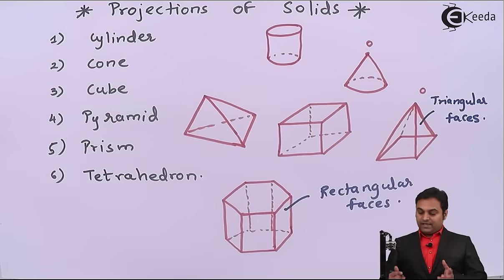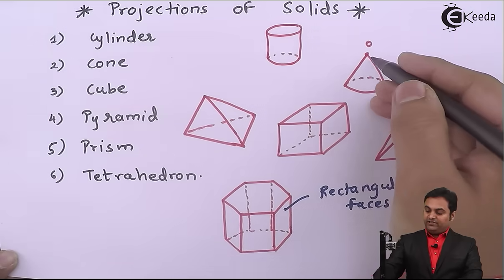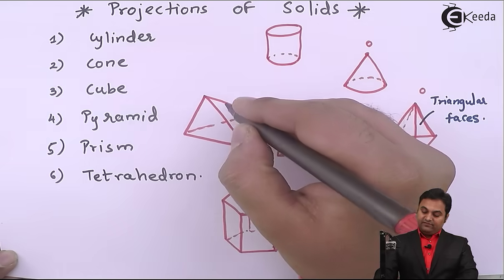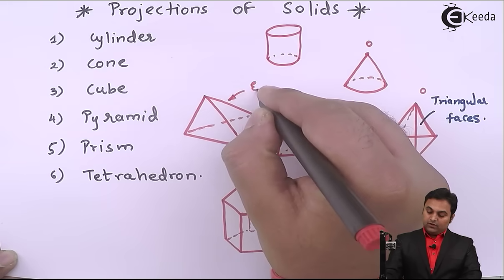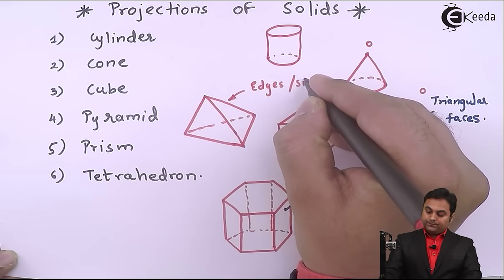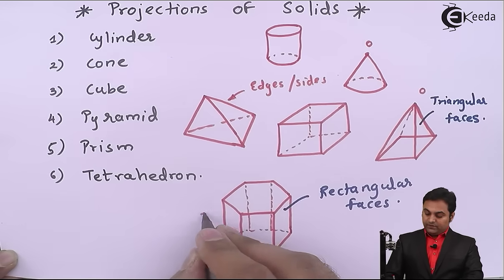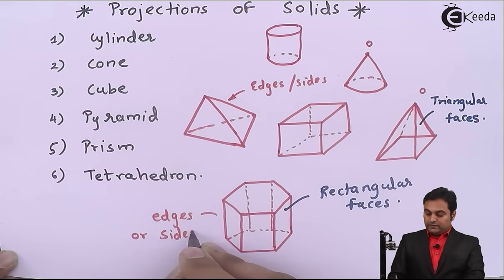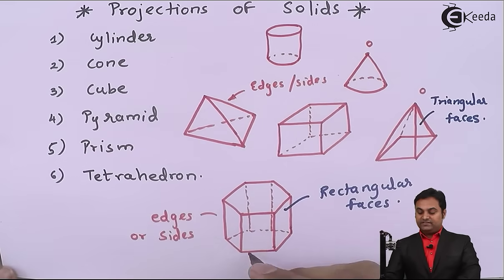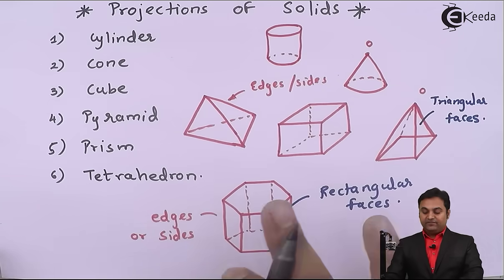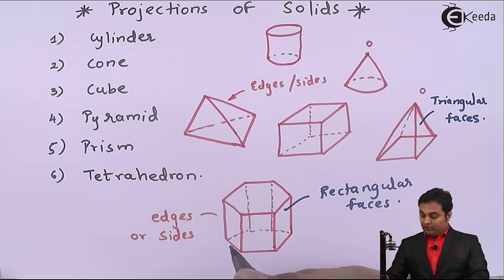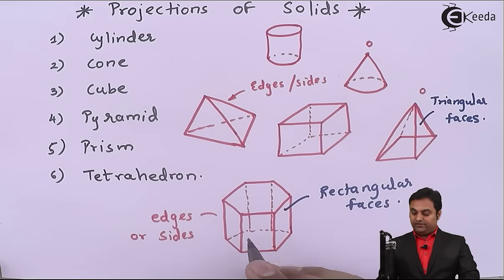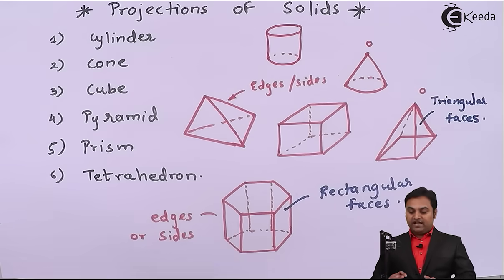So that is a tetrahedron. In case of solids, as I have defined the vertices for cone and for prism, the other solids also have edges or sides. Like in case of a hexagonal prism, it will have 6 edges and 6 rectangular faces. If there is a square prism, then it will have 4 base edges, 4 sides, and 4 rectangular faces.